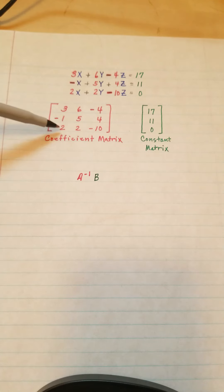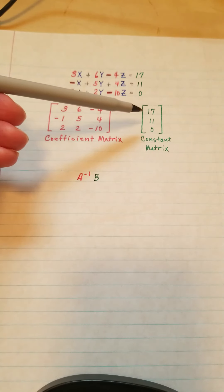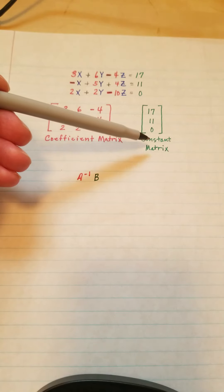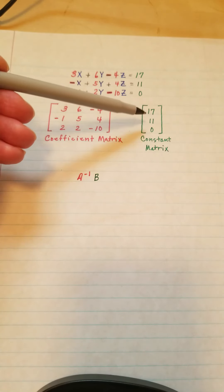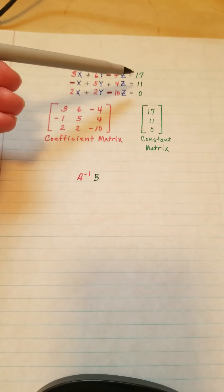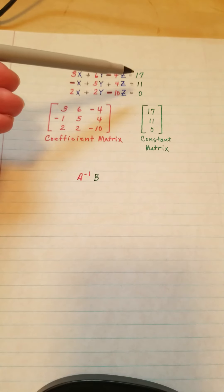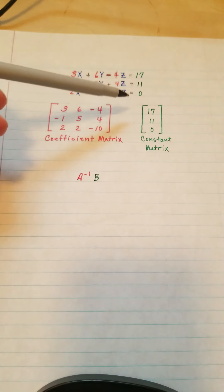After I came up with my coefficient matrix, I also constructed my constant matrix. Remember, the constant matrix comes from the constant terms that appear at the right of the equal sign.